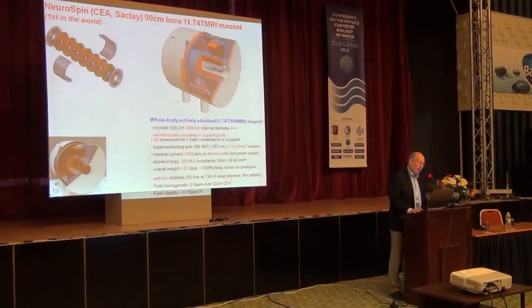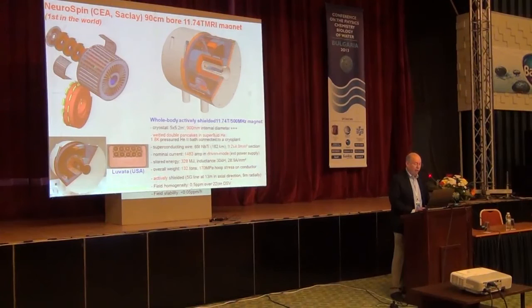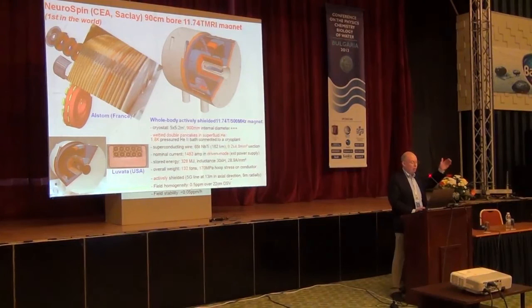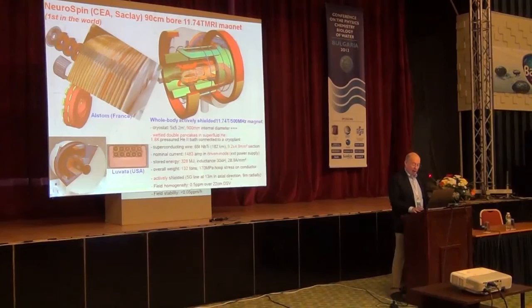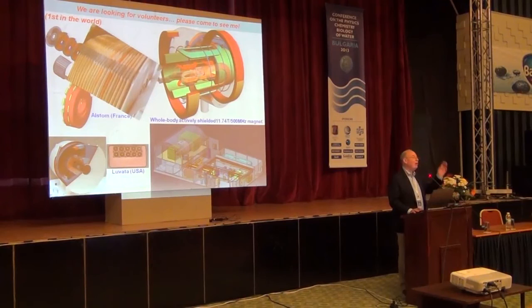Just to show you that in order to continue exploring this field, we are building an 11.7 Tesla whole-body human MRI magnet — I think it's the first in the world at this field strength for people. It's almost ready, it will be delivered in less than a year, hopefully. It's really a matter of physics and technology — some impressive engineering — and we have to produce cooling to bring this magnet down to 1.8 Kelvin. It's a very important and powerful system. If you are interested, that's all — thank you.